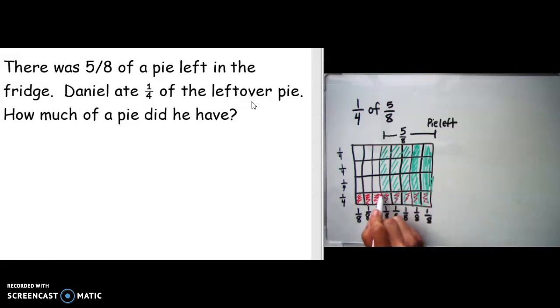I am going to outline the section, the pieces that have both green and red. And that's one, two, three, four, five. So that's going to be my numerator: five. My denominator is how many equal pieces are there.